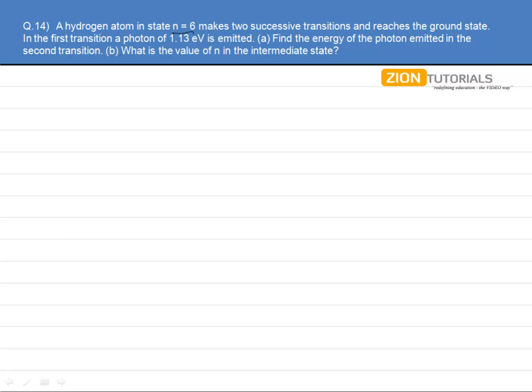In the first transition, a photon of 1.13 electron volts is emitted. Then find the energy of the photon emitted in the second transition and what is the value of n in the intermediate state.